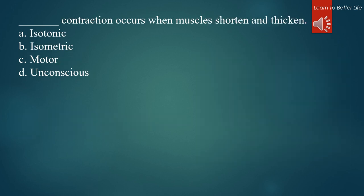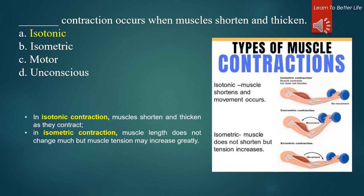What contraction occurs when muscles shorten and thicken? A. Isotonic. B. Isometric. C. Motor. D. Unconscious. The answer is A. Isotonic. In isotonic contraction, muscles shorten and thicken as they contract. In isometric contraction, muscle length does not change much but muscle tension may increase greatly.